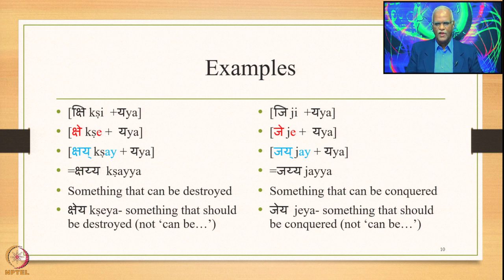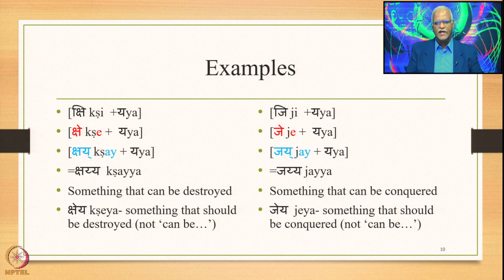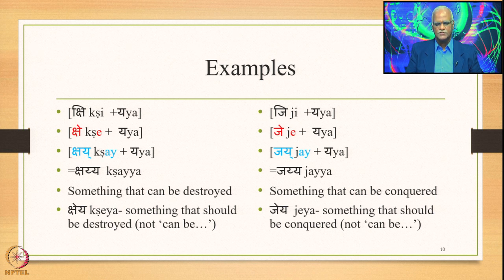We notice the contraction of the overall scope of application of this particular Sutra. Such Sutras are called Nipatana Sutras because they are too specific — specific both in terms of the meaning conveyed and the word forms generated, pertaining only to two roots: Kshi and Ji.